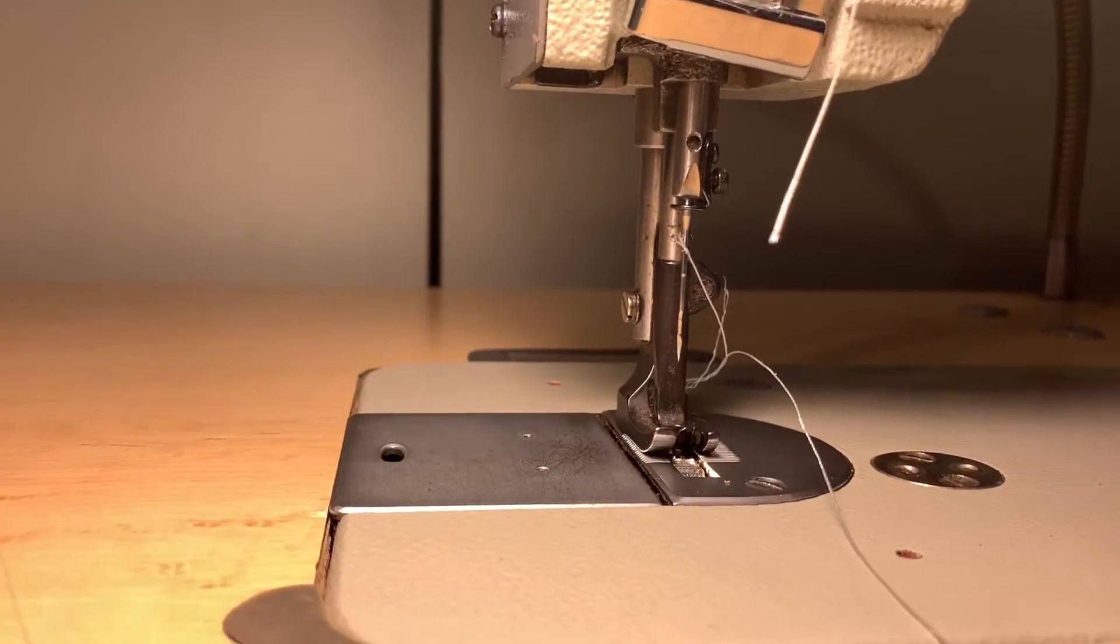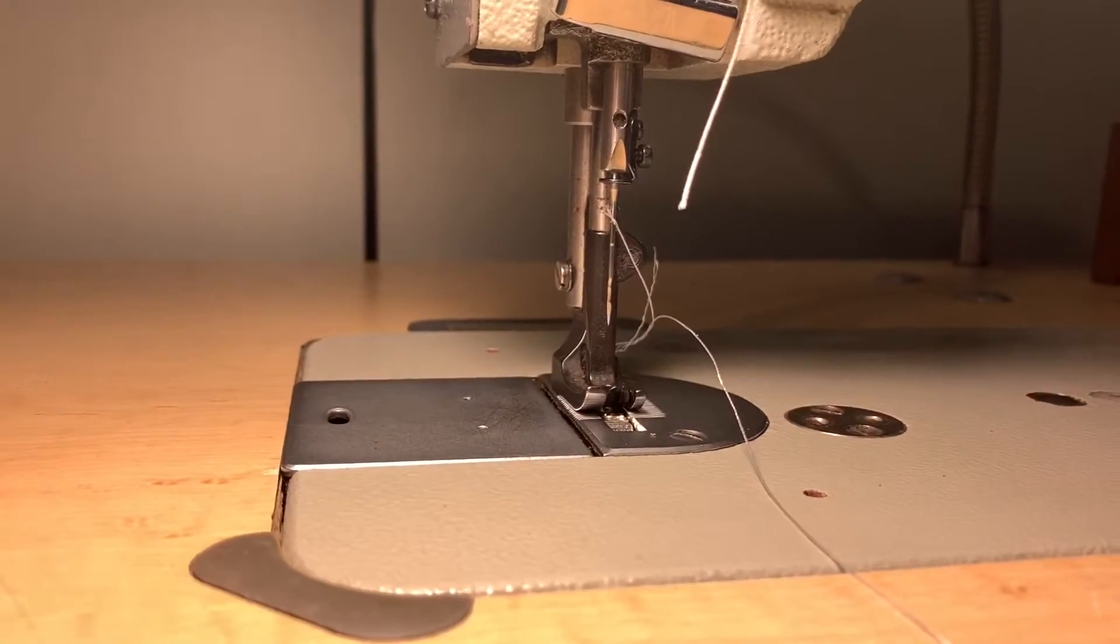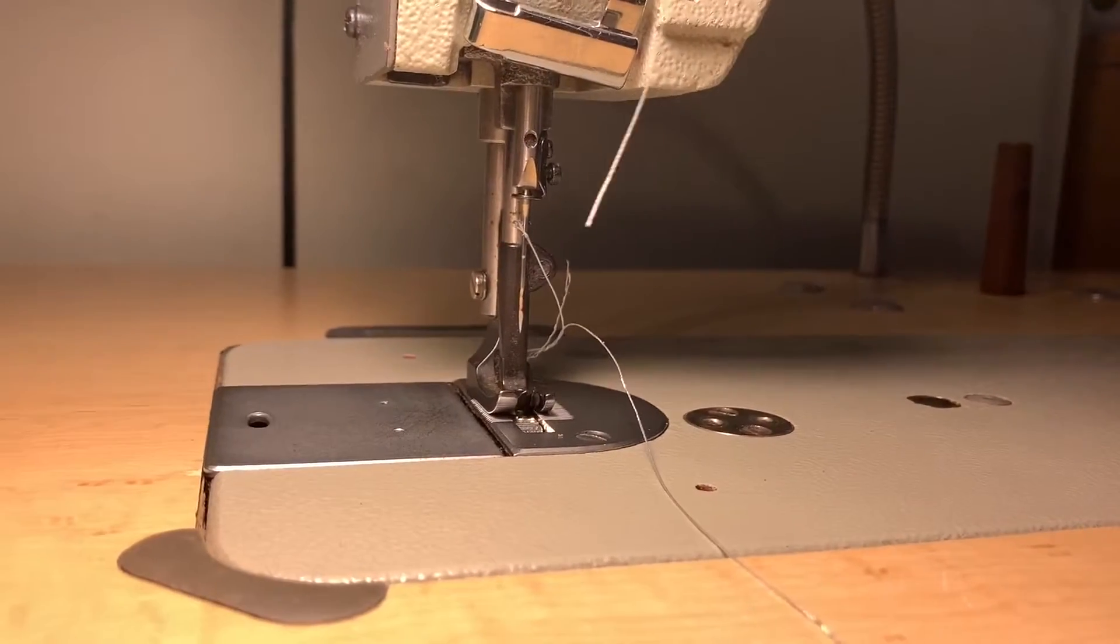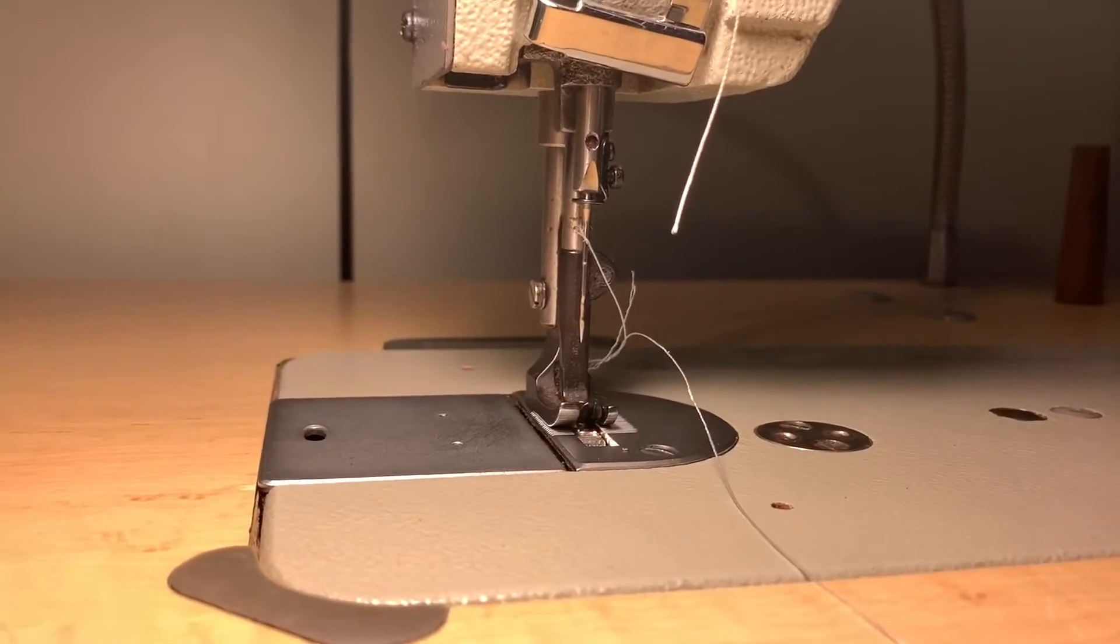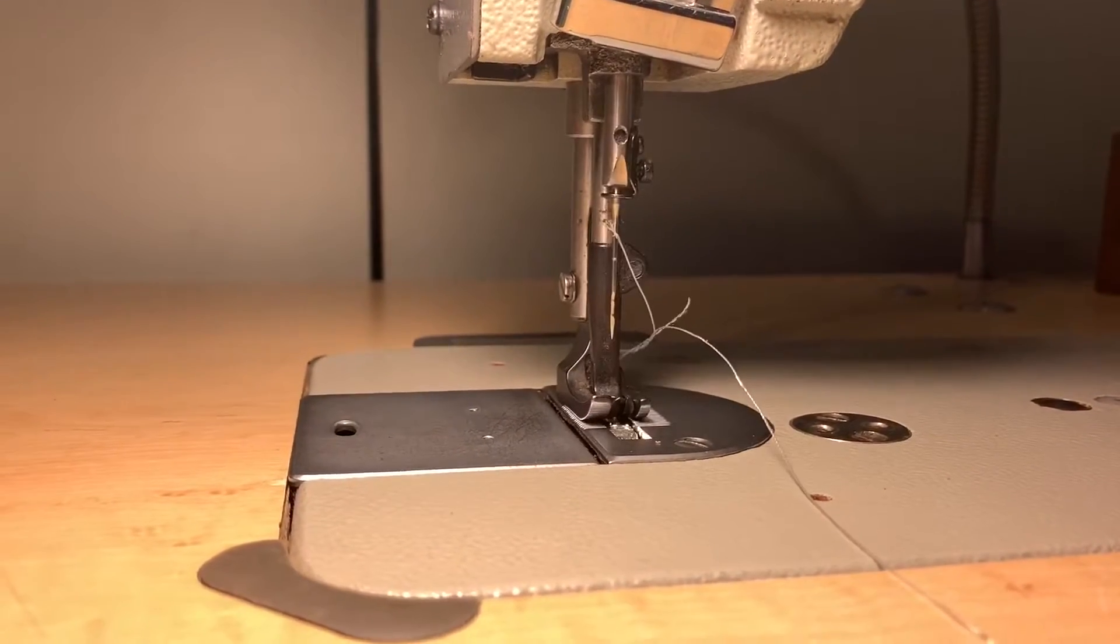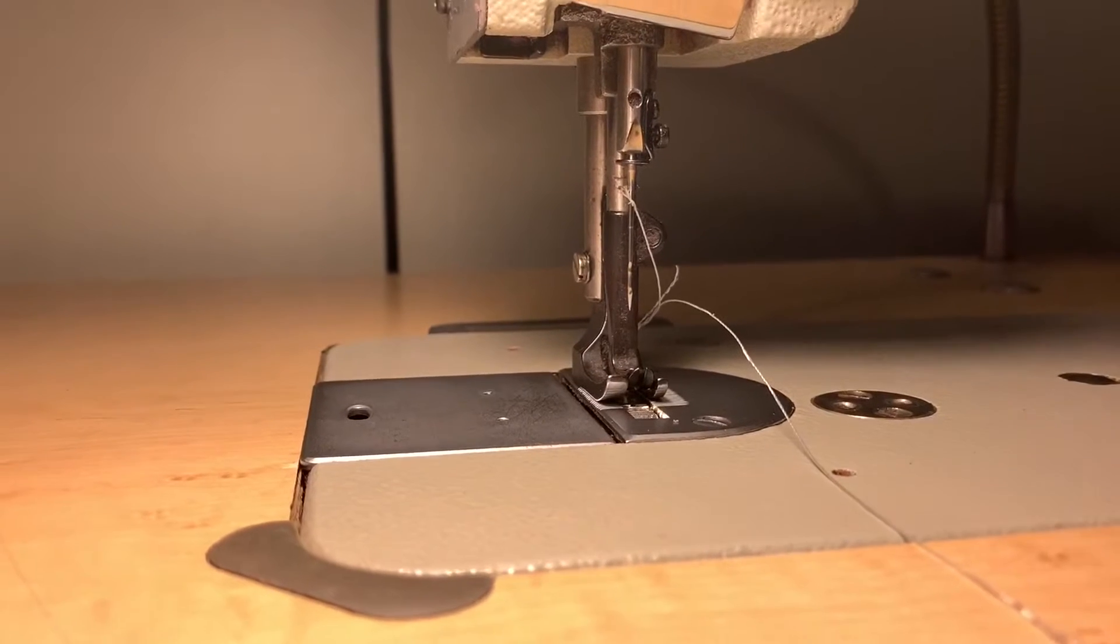Alright so this is a test of the sewing machine with the stock pulley on the motor set to 500 rpms. We're just gonna take a look at how it looks before I put the speed reducer on it. So this is just as slow as I can to start it.